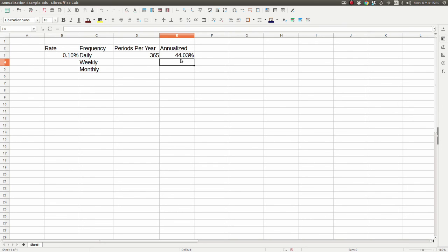And there's our 44.03% again. If we were to do it for weekly, the weekly periods per year is 52, and the monthly is 12. I just copy the equation down, and there are our results.